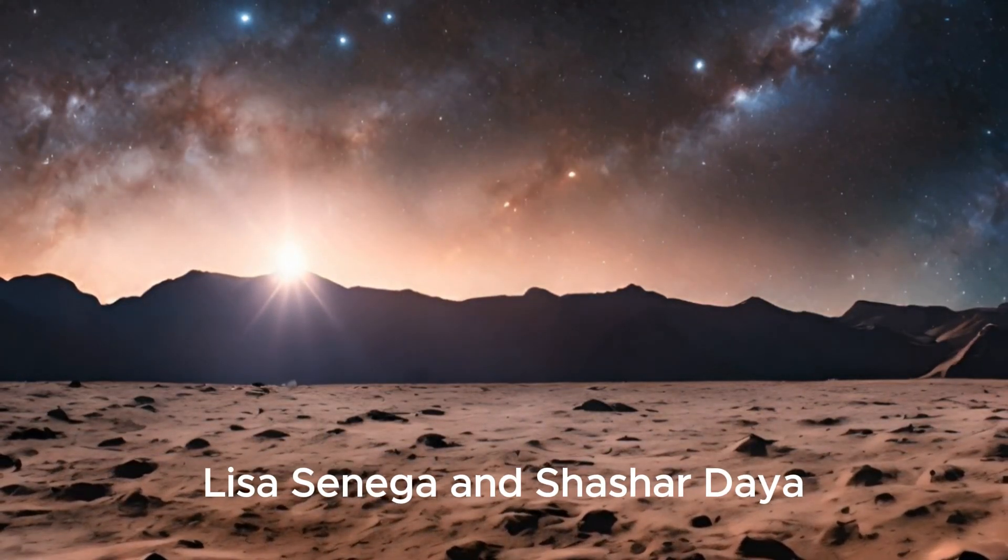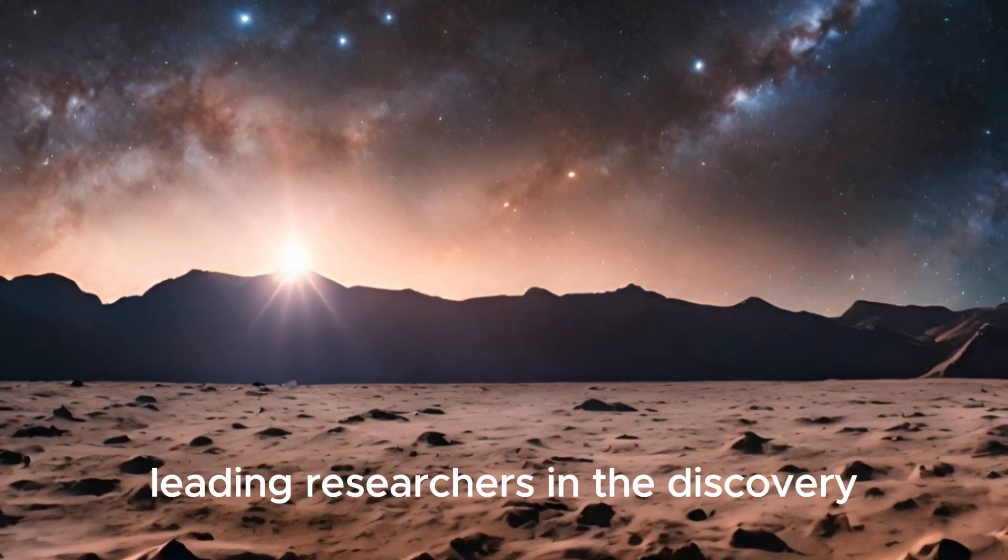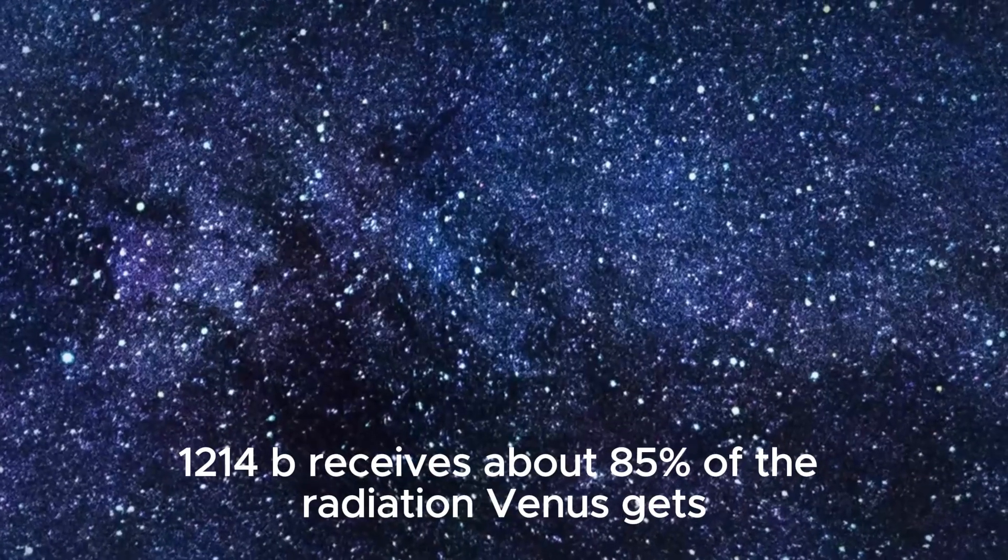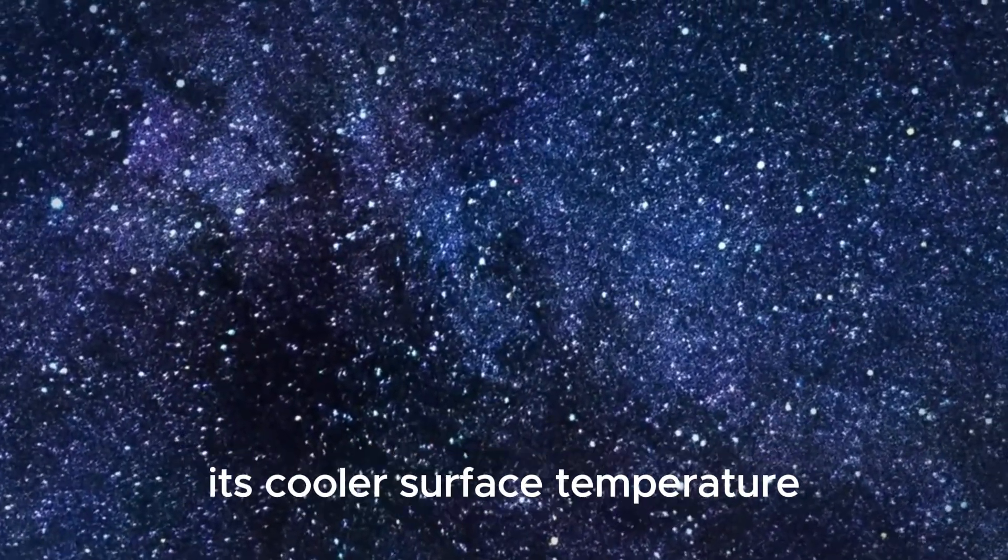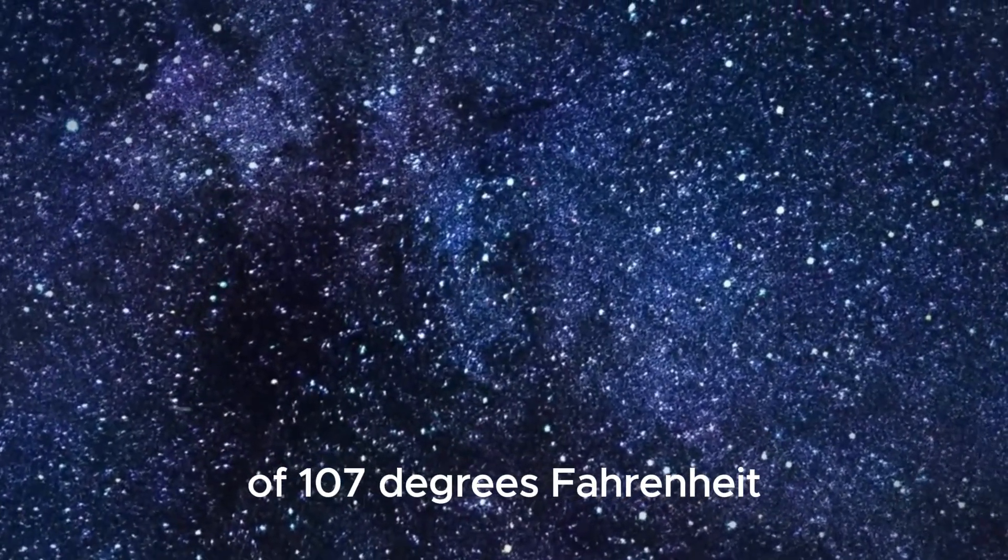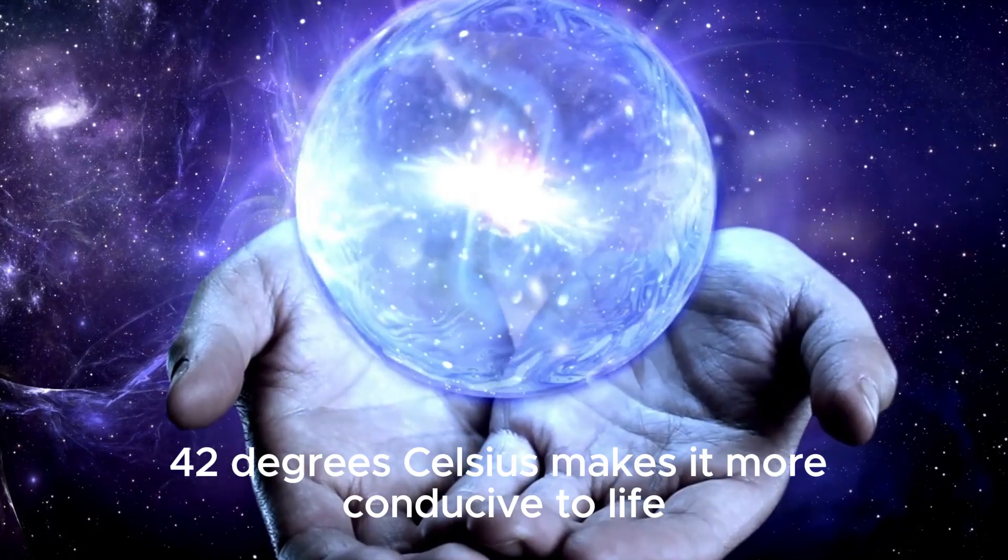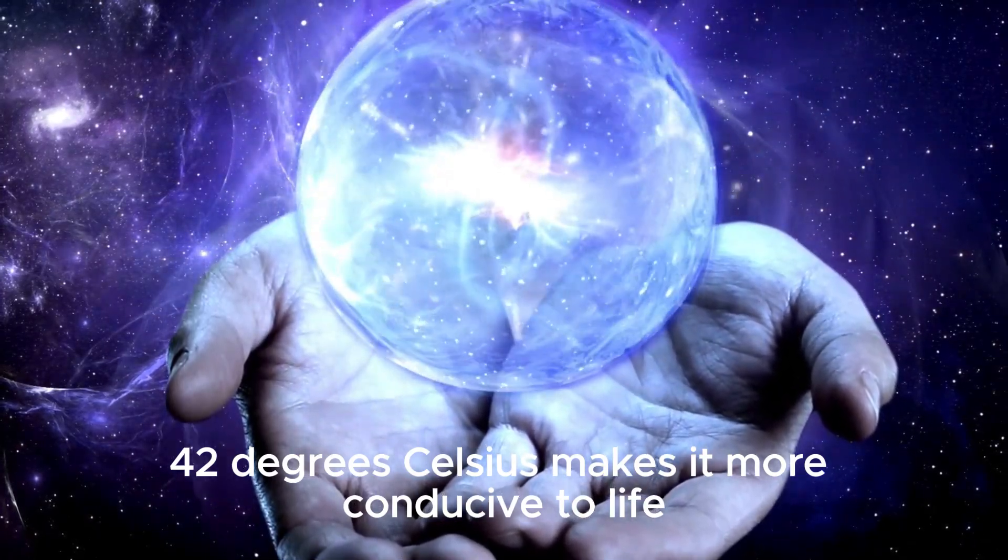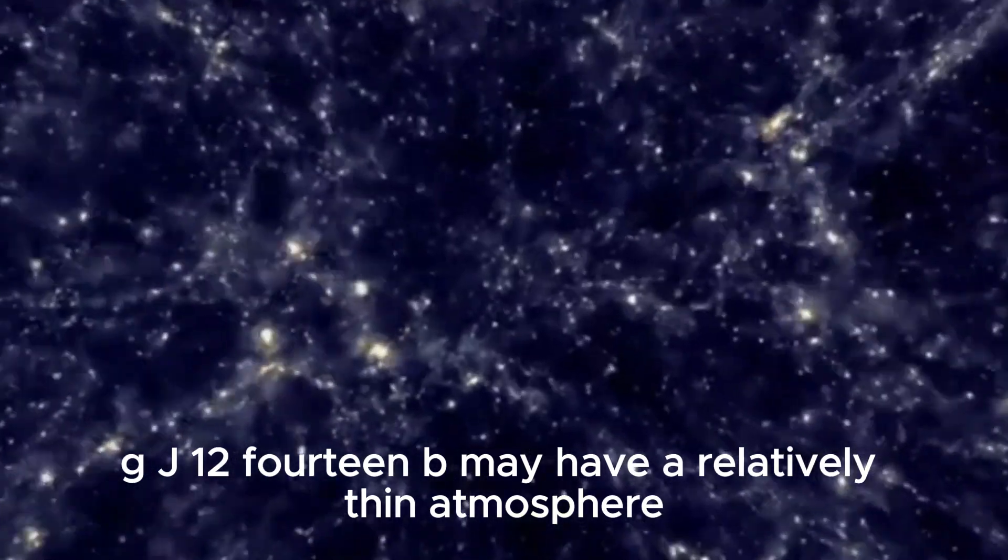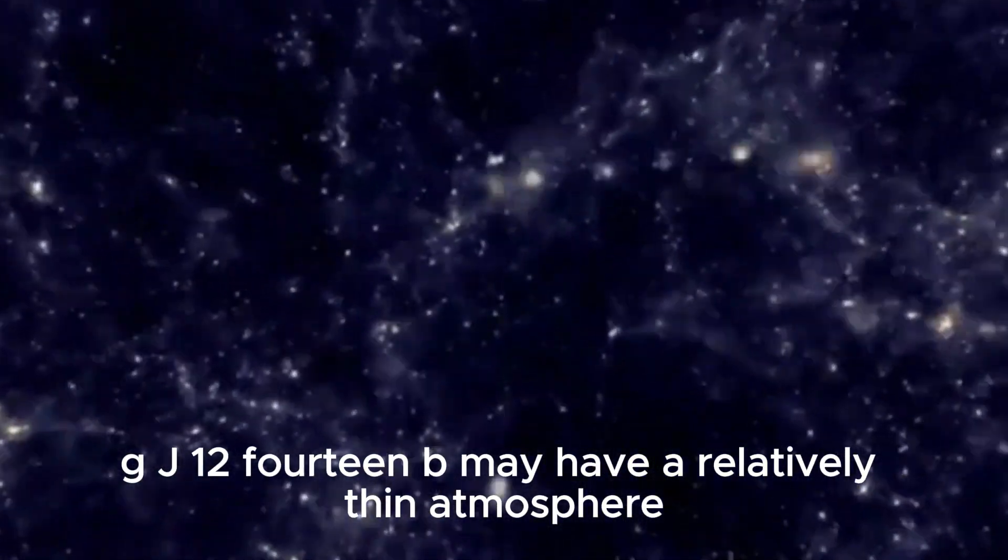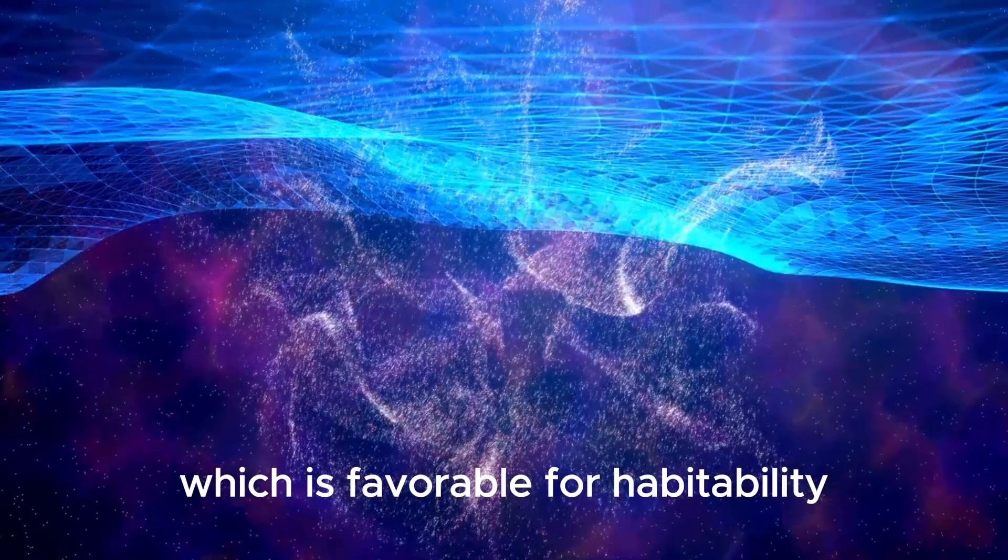Scientists are cautiously optimistic about the potential habitability of GJ 1214b due to its proximity to Earth and its position near its star's habitable zone. Leading researchers note that while GJ 1214b receives about 85% of the radiation Venus gets, its cooler surface temperature of 107 degrees Fahrenheit, 42 degrees Celsius, makes it more conducive to life. Unlike Venus, which has a thick atmosphere trapping heat, GJ 1214b may have a relatively thin atmosphere, which is favorable for habitability.